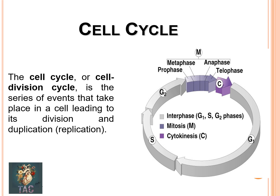The cell cycle, or cell division cycle, is a series of events that take place in a cell leading to its division and duplication or replication. In the diagram, you can see first the G1 phase, then the S phase (synthesis phase), then G2 or growth two phase. These three phases collectively are called interphase. After the G2 phase, cells enter mitosis, and when mitosis is complete, cytokinesis occurs and the cell divides into two diploid daughter cells.